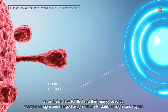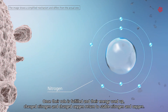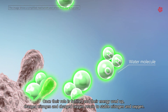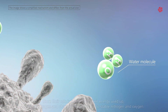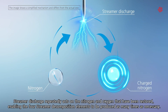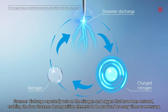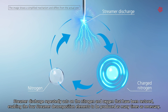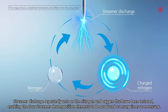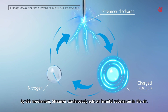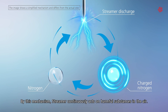Once their role is fulfilled and the energy used up, charged nitrogen and charged oxygen return to stable nitrogen and oxygen. Streamer discharge repeatedly acts on the nitrogen and oxygen that have been restored, enabling the four streamer decomposition elements to be produced as many times as necessary. By this mechanism, Streamer continuously acts on harmful substances in the air.